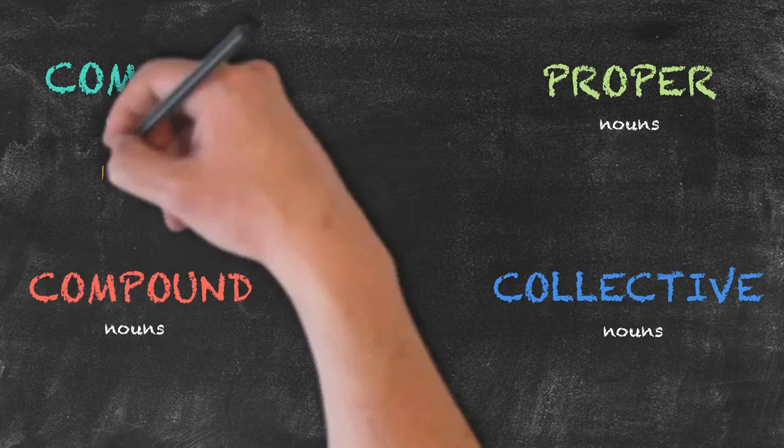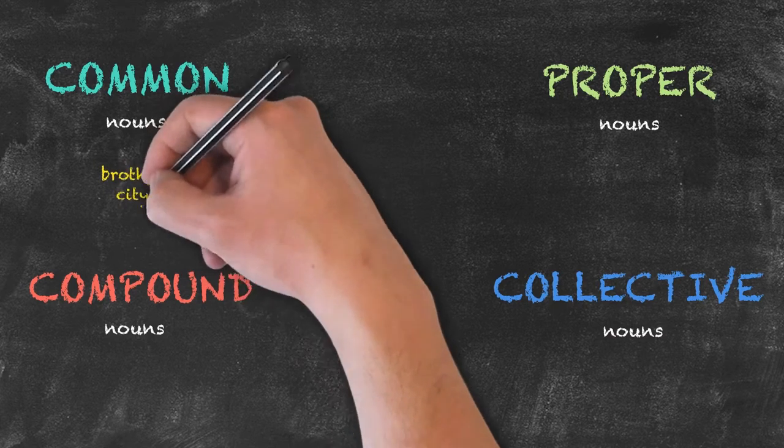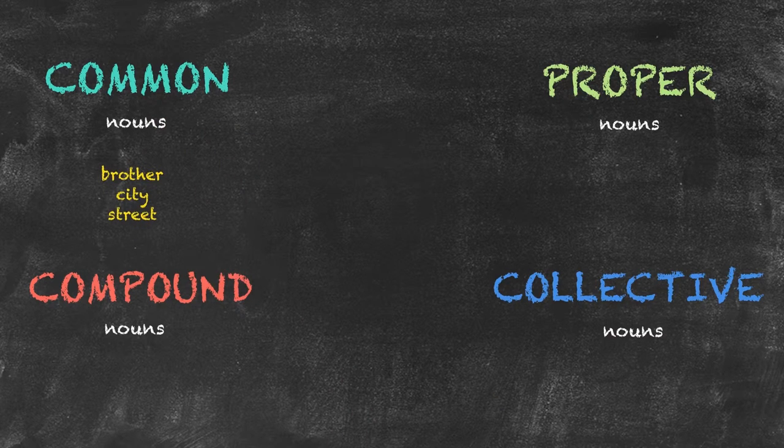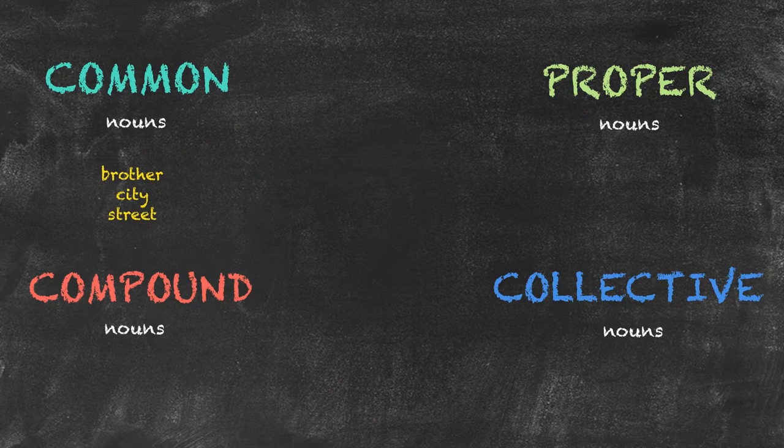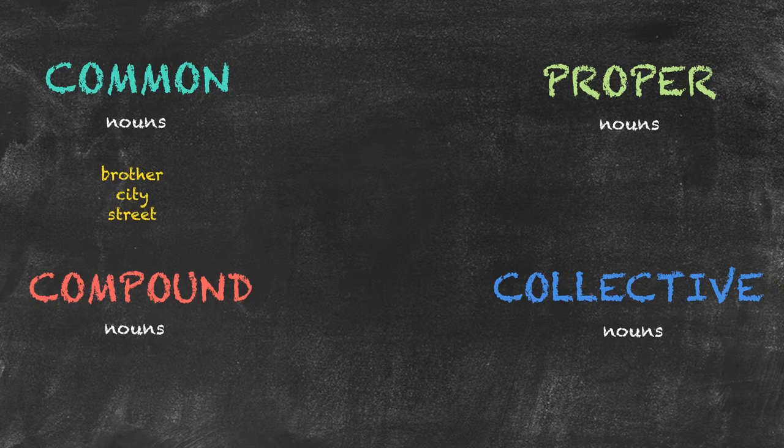A few examples of common nouns would be brother, city, street. These nouns are not typically capitalized unless they come at the beginning of the sentence.